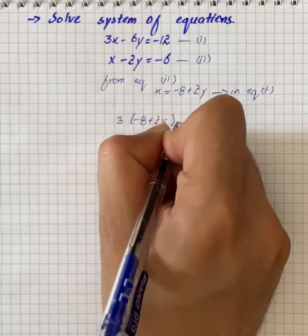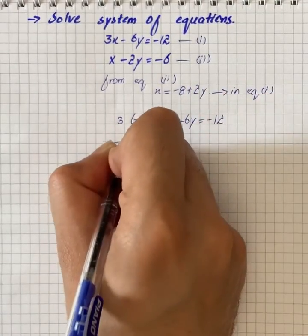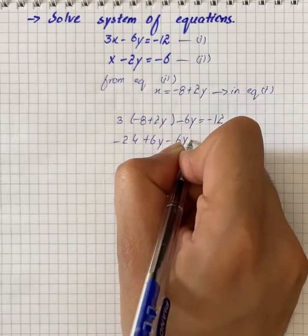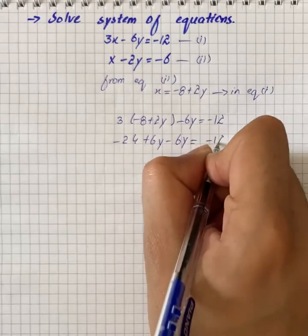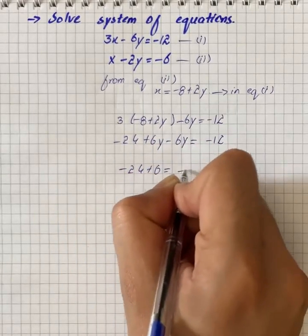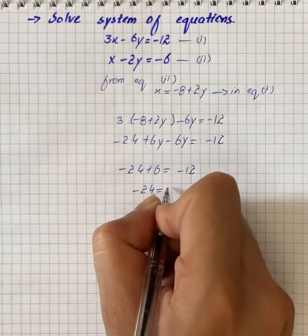Minus 24 plus 6y minus 6y equals to minus 12. That gives us minus 24 plus 0 equals to minus 12, so minus 24 is equal to 12.